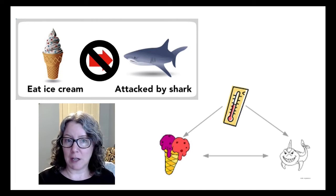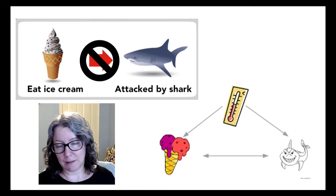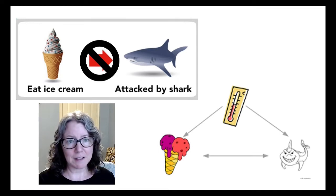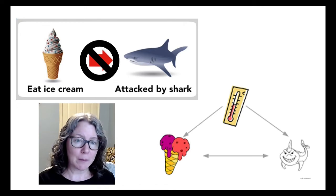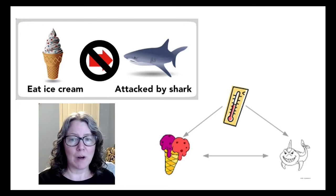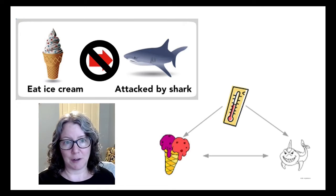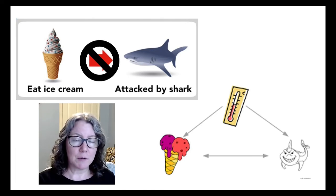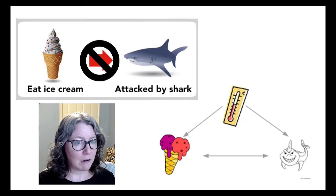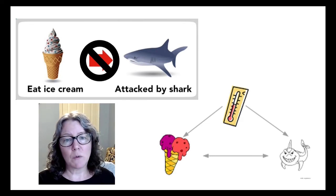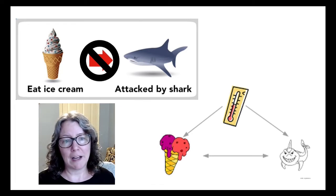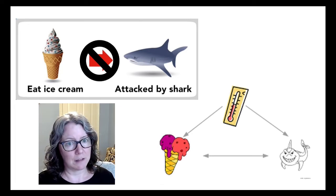There is an alternate explanation that makes more sense. A third factor — in this case hot weather — can explain both why people are eating more ice cream and why they are more likely to be attacked by a shark, since they're more likely to be at the beach. Here we have two variables that are related, but we don't see one clearly happening before the other, and we can't rule out an alternate explanation. So it's not a cause.